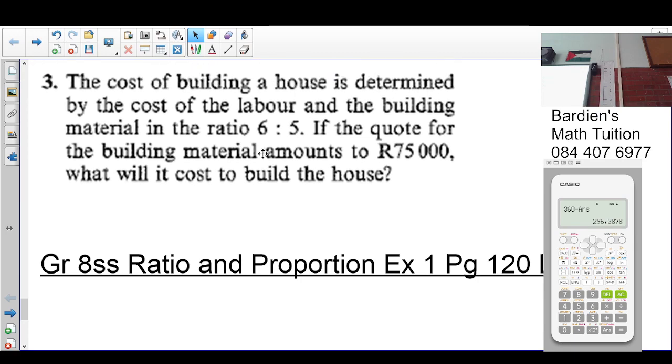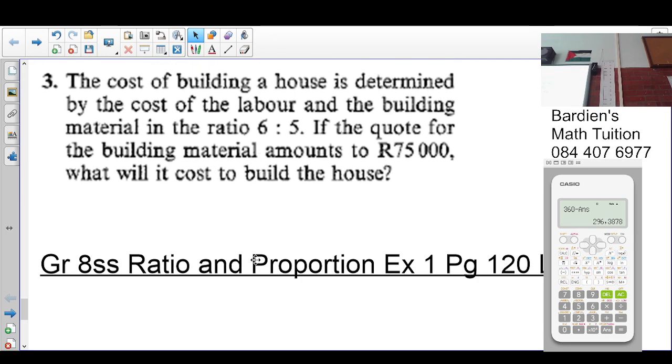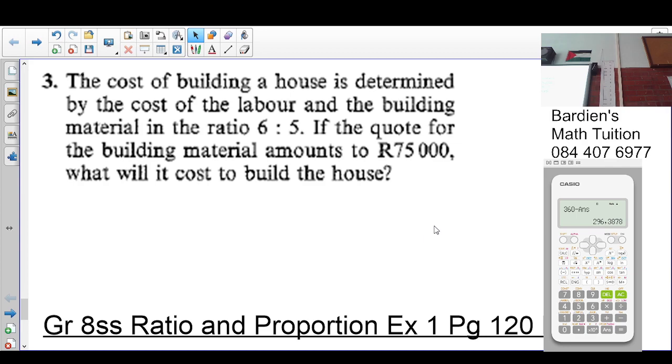The cost of building a house is determined by the cost of labor and building material in the ratio 6 is to 5. So labor to building material is 6 to 5. If the cost for the building material amounts to 75,000 rand, what will the cost of the house be?